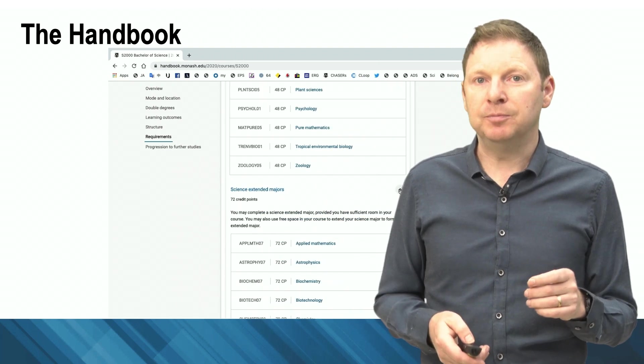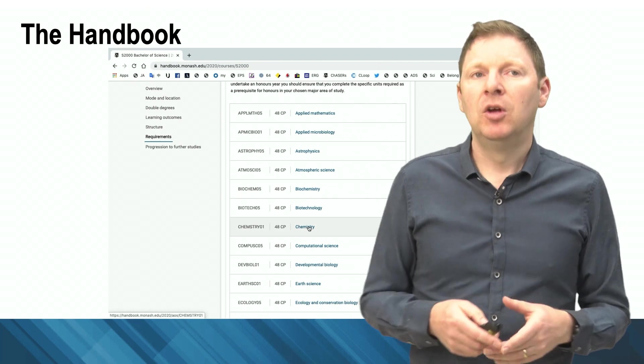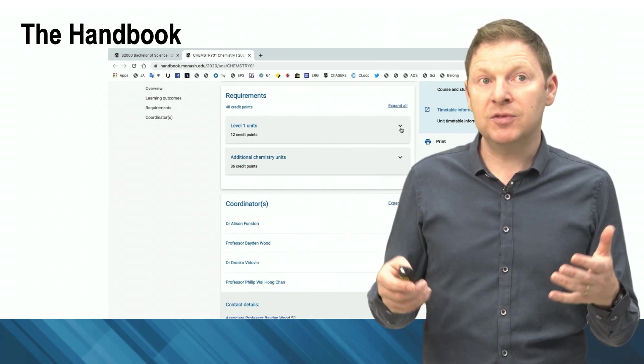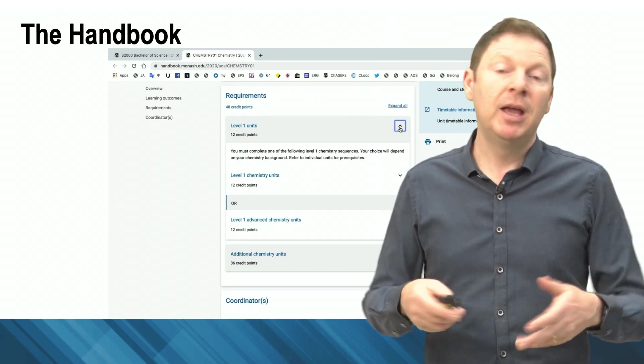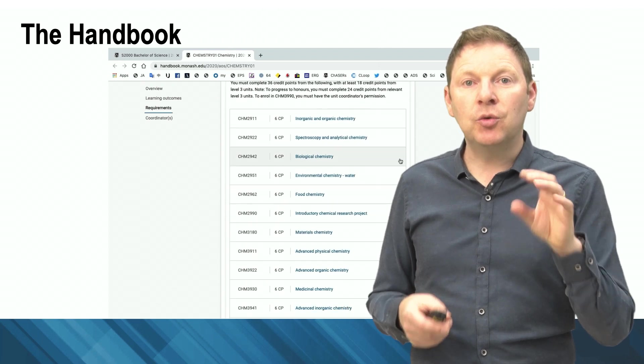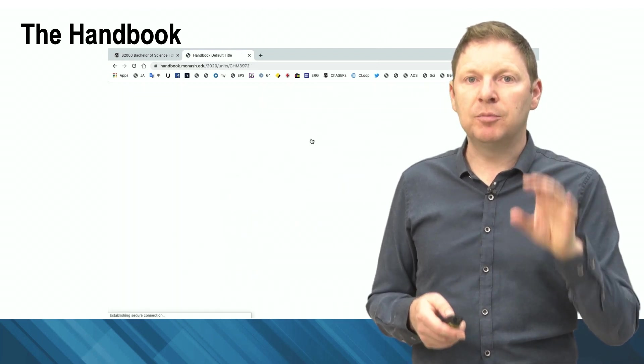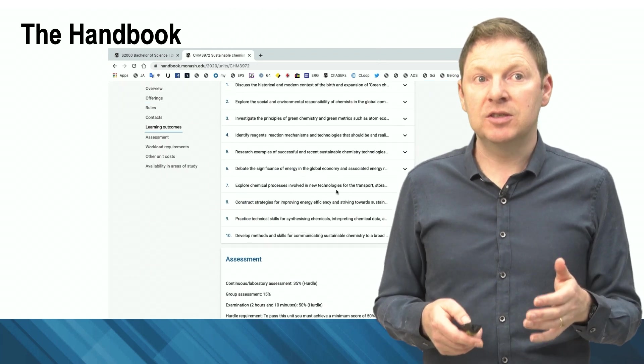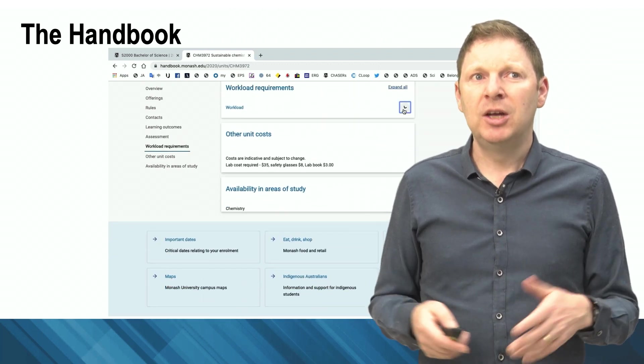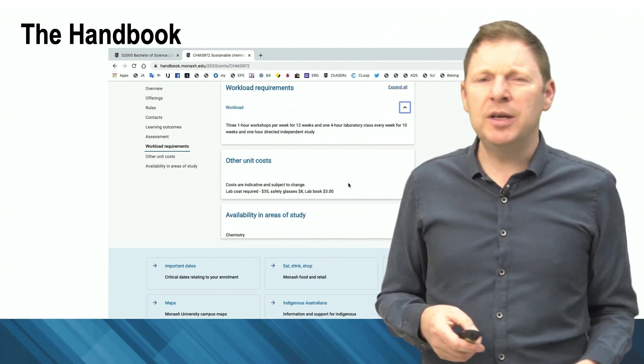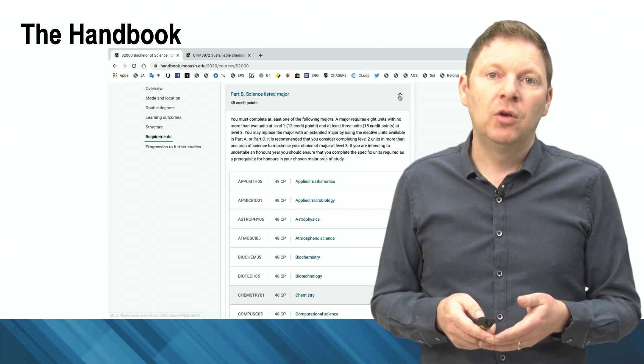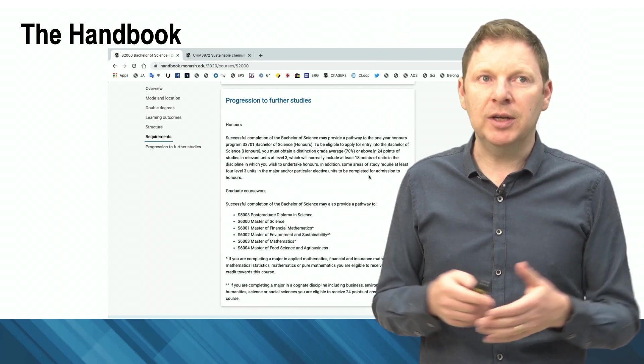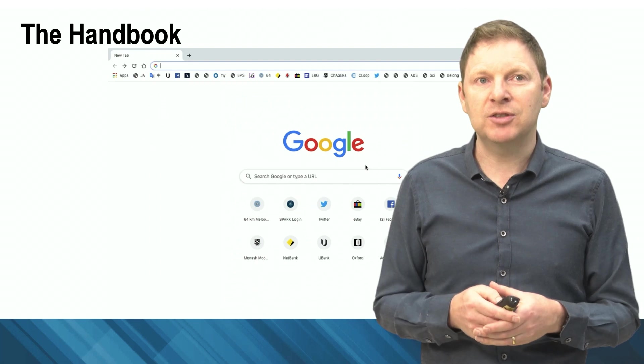Let's have a look at an example. Let's go with chemistry. So if we bring up the chemistry area of study entry, you can see the learning outcomes for chemistry specifically, the requirements that you need to fulfill to make sure that you've finished that chemistry major properly. Click on any of the units, you'll bring up the handbook entry for the unit itself. This is the subject. In this case, we're looking at sustainable chemistry. It shows you the workload requirements, how many lectures do you have a week, are there any additional costs for the unit. So you can see the handbook has got everything. Finally, where you can do your electives and progression on to further study, so our other masters courses.